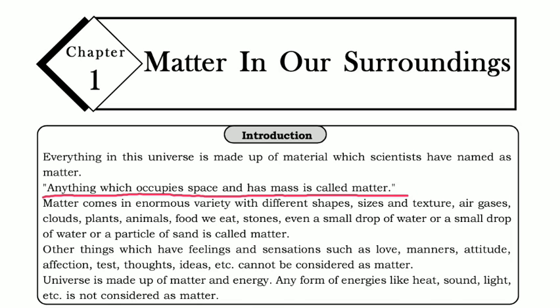Examples of matter include plants, animals, food we eat, stones — even a small drop of water or a small particle of sand is considered matter, because they all occupy space and have mass. But some abstract feelings like sensation, love, manner, attitude, thoughts, and ideas are not considered matter because they don't have any space or mass.